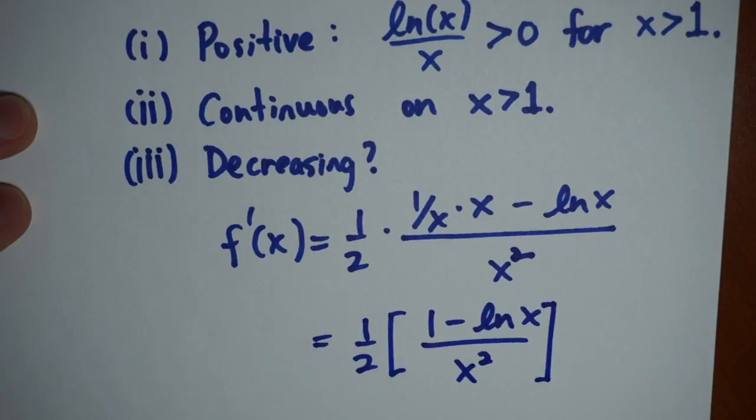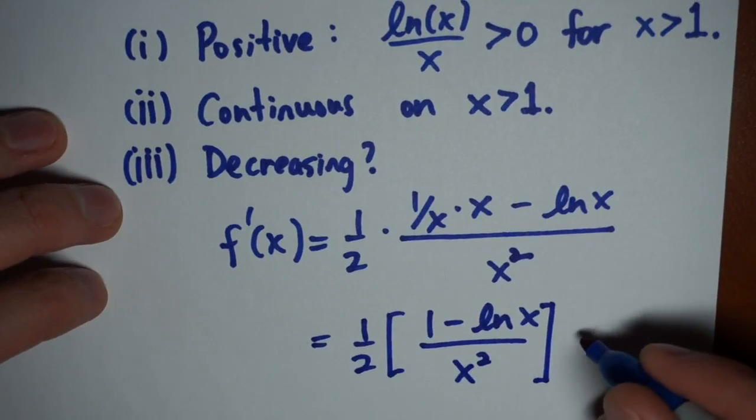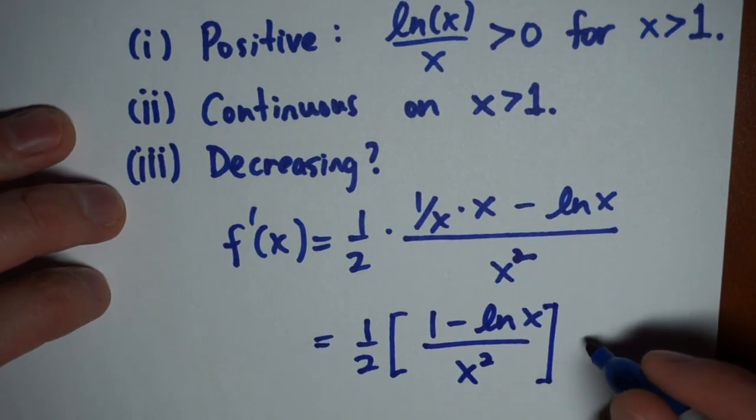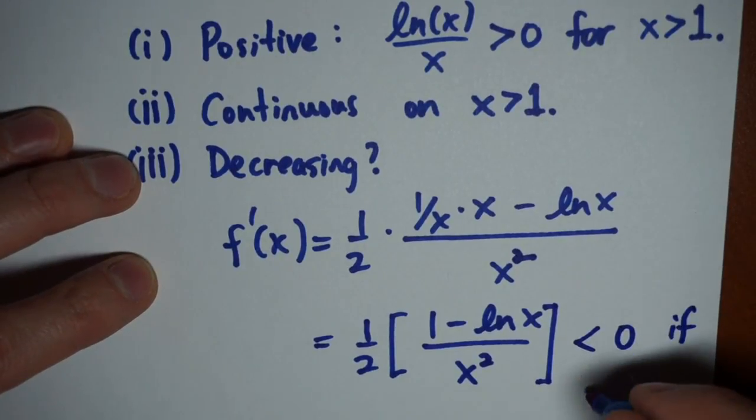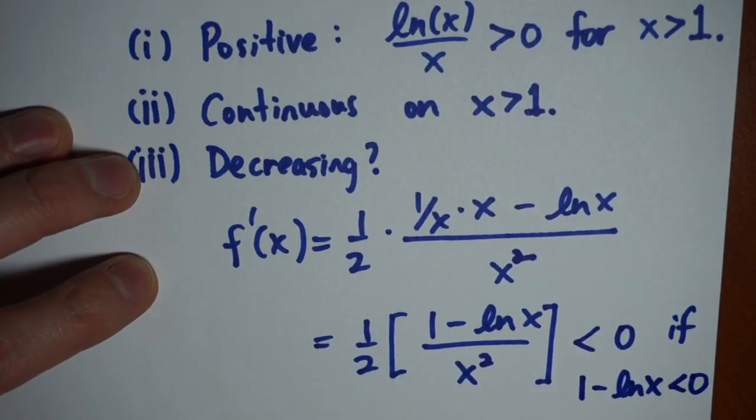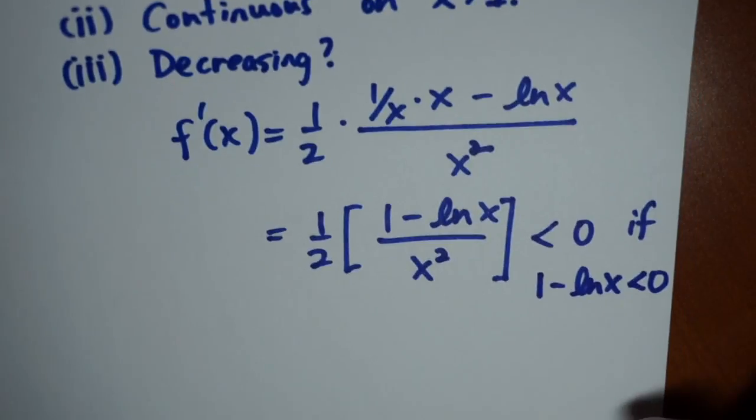My denominator is always a positive number, so in order to make this negative, I need my numerator to be negative. And so what I'm interested in here is my numerator, one minus log x, has to be a negative number.